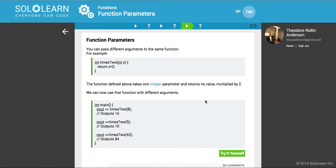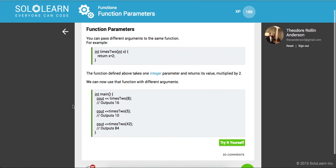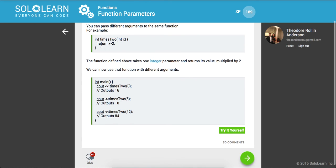Awesome. You can pass different arguments to the same function. So here's a function which is just gonna take a value and multiply it by 2. We can now use that function with different arguments. So right here we're calling it with 8, with 5, and 42, and it's really just gonna perform the logic within the block of code.